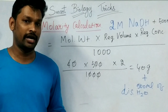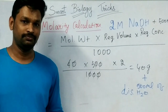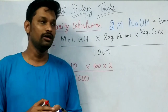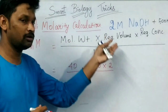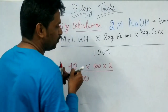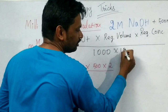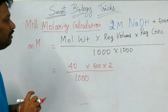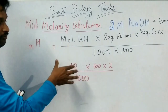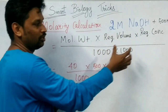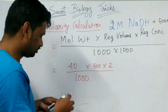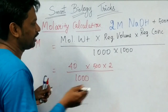Next we will discuss the millimolar formula. Similarly, you will be asked to prepare millimolar calculations in some procedures. If you understand the molarity calculation, millimolar calculation is very simple — the only thing is you are going to add one extra thousand. This is the millimolar formula: you know the molecular weight, required volume, required concentration, divided by 1000 into 1000.